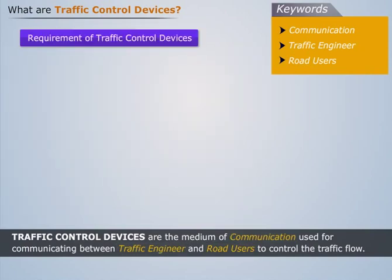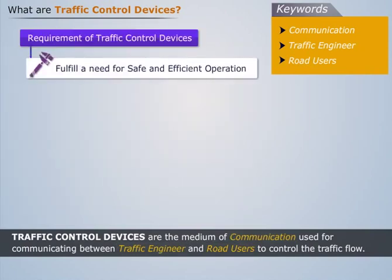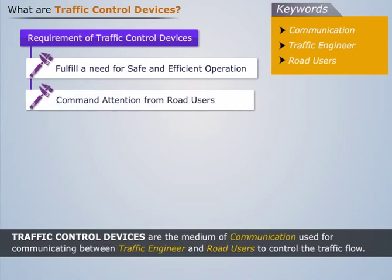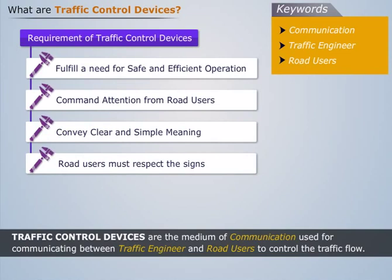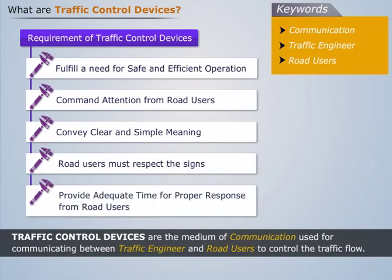Now let's see the requirements of traffic control devices. Each device must fulfill the purpose for safe and efficient flow. To command attention from road users, the designs should be distinctive, clear, and visible. The design of the control device should be clear and simple to have easy and fast understanding of the message. All devices should carry meaningful and important messages to reduce the tendency of drivers to ignore them. The devices or road signs should be kept at suitable distance to provide adequate time for proper response from road users.